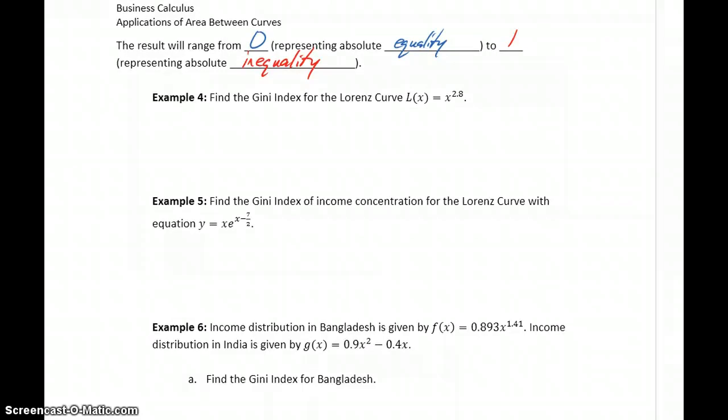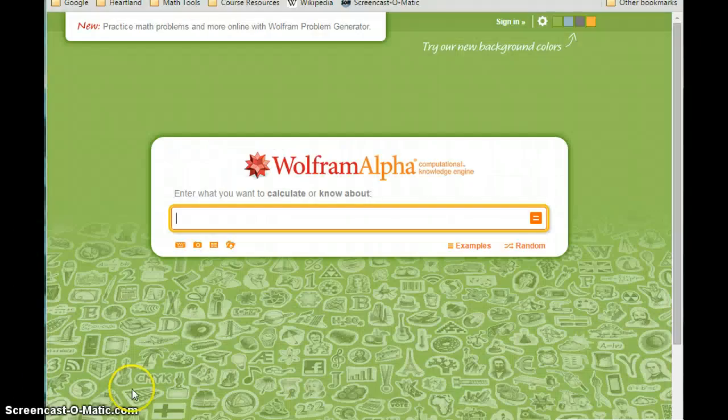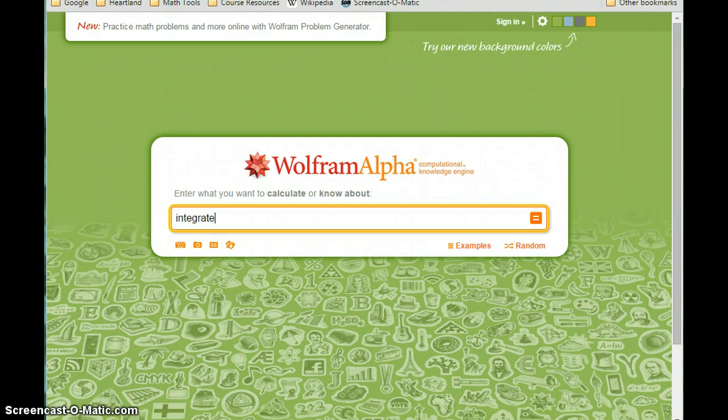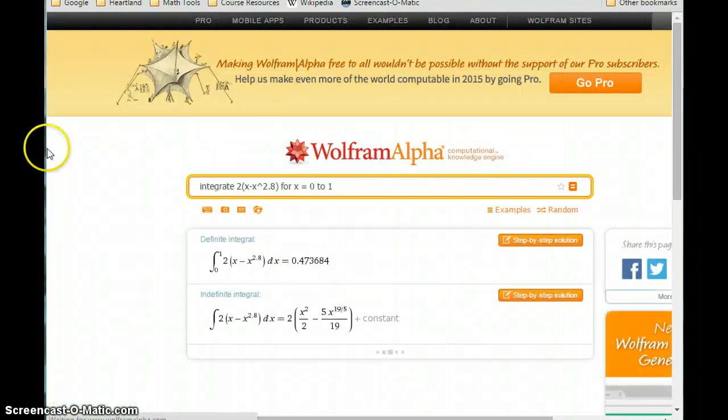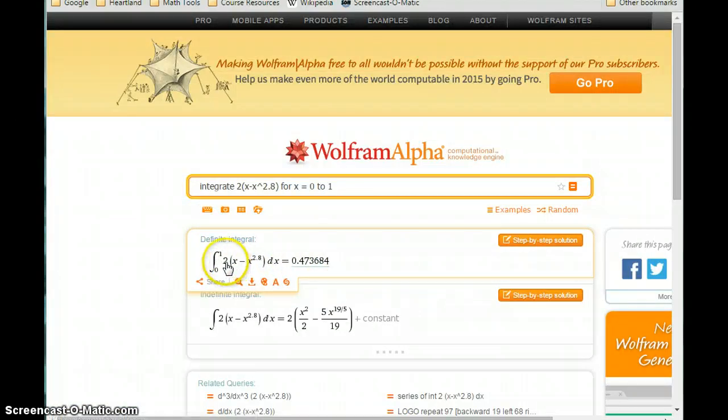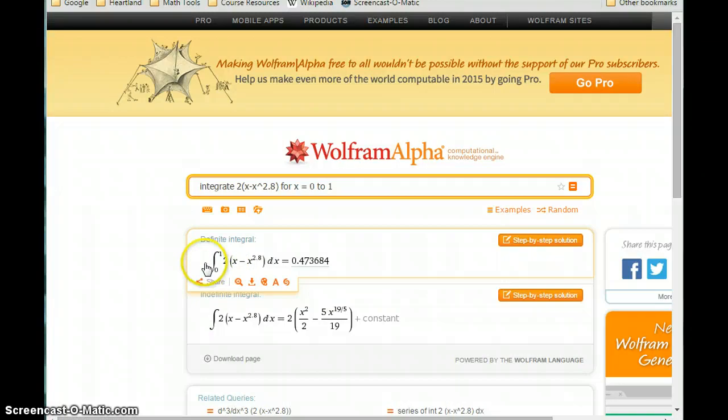So as an example, we could look at finding the Gini index for Lorenz curve x to the 2.8 power. So this would be 2 times the integral from 0 to 1 of x minus x to the 2.8 dx. So we're taking that line y equals x, and we're subtracting out this function that has smaller function values, x to the 2.8. So we would want to calculate or integrate 2 times x minus x to the 2.8 for x equals 0 to 1. And we can check that that integral statement looks correct, whether the 2 is on the inside or the outside of the integral means the same thing. And we get an area of about 0.474.